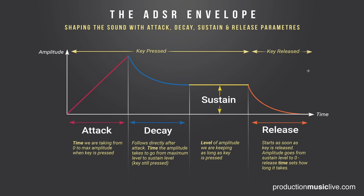Take a look at this graphic — maybe print it out and hang it on your wall. Keep in mind: attack is the time from zero to maximum amplitude when the key is pressed. Decay time follows directly after attack — it is the time the amplitude takes to go from maximum level to sustain level, still pressing the key. Then we have our sustain level, the level of amplitude we keep as long as the key is pressed. Release time starts as soon as the key is released and the amplitude goes down from sustain level to zero, and the release time sets how long that process takes.